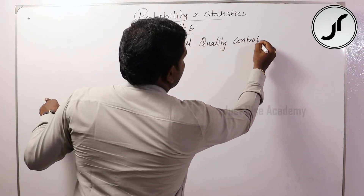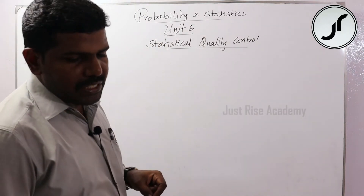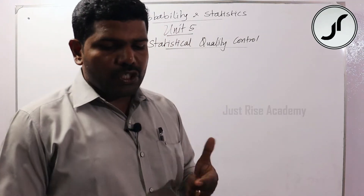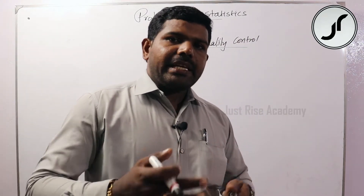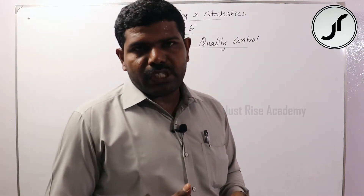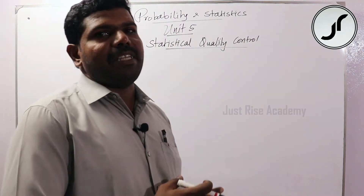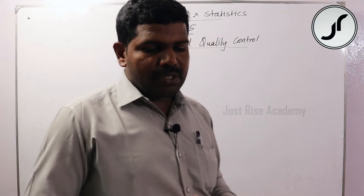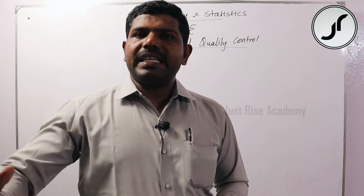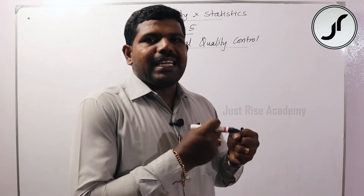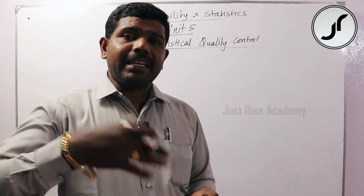In unit five, we are going to see statistical quality control. The control chart displays the successive measurements of the process. We have two types: control chart for variables and control chart for attributes.